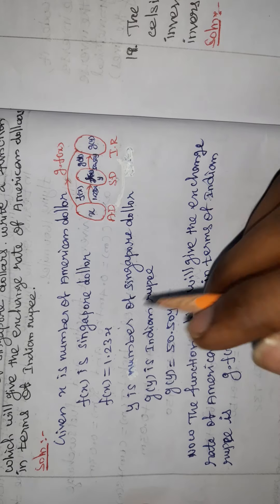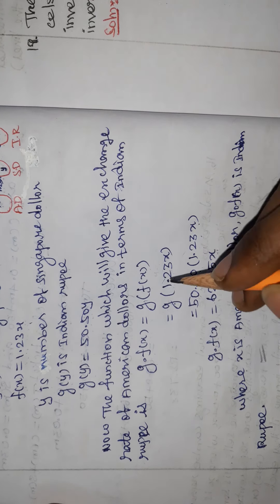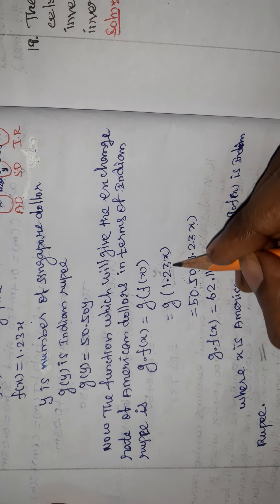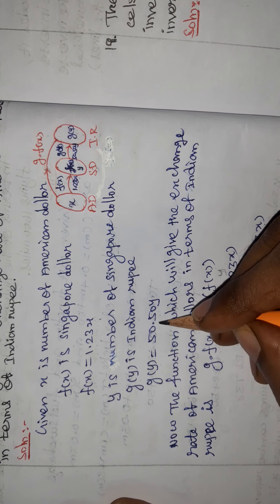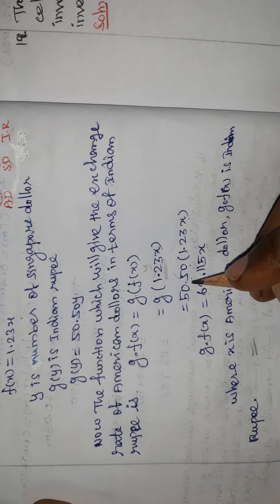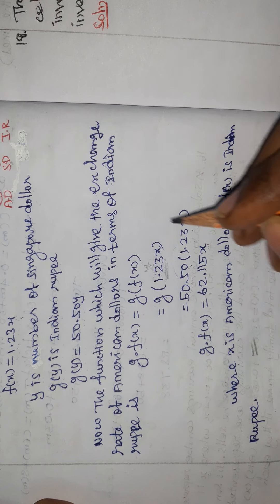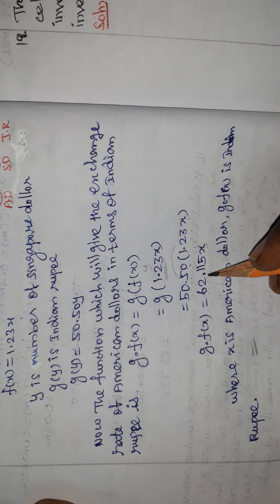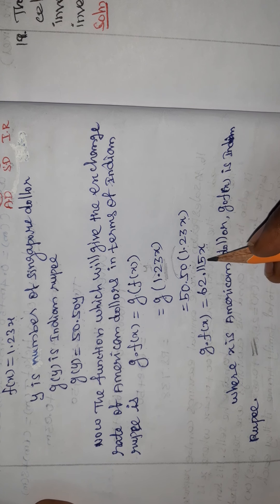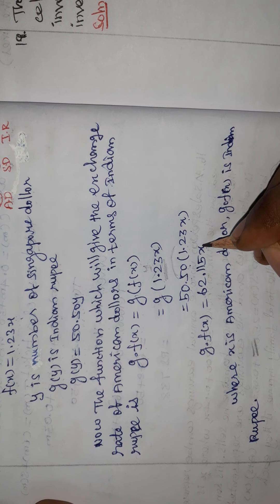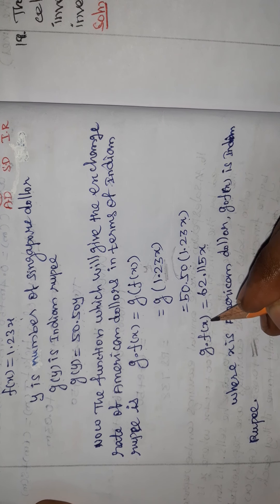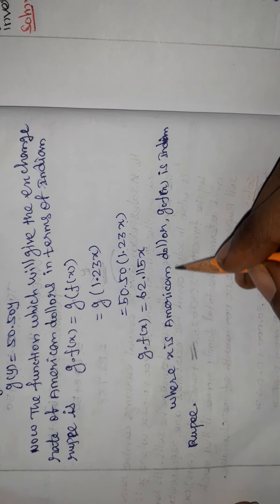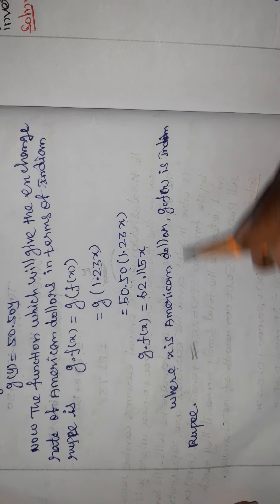G of F of X, where F of X is 1.23X. Substituting Y equal to 1.23X into G, we get 50.50 times 1.23X, which gives 62.115X. So where X is the American dollar amount, G composite F of X gives the equivalent in Indian rupees. Thank you.